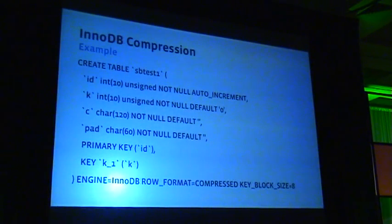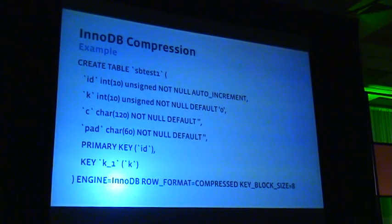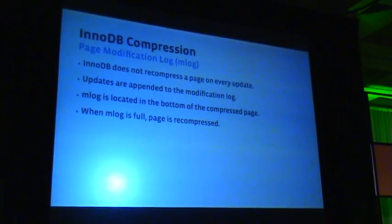This is how you create a compressed table. The schema is the same as the Sysbench schema shown earlier. The only difference is in the last line, where the row format is specified as COMPRESSED and the key block size is specified as 8. This is the table schema used for the compressed configurations in the benchmark.